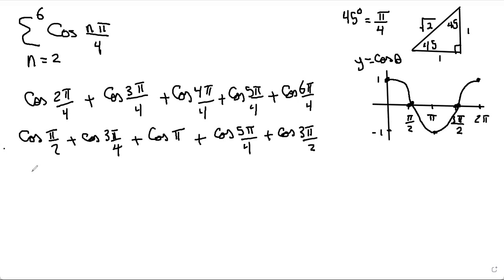Now let's deal with the easy ones first. Cos π over 2 is 0. I'm going to leave this for a bit. Cos π, I can interpolate from the graph here, is negative 1. I'll leave cos 3π over 4 for a second and cos 5π over 4.